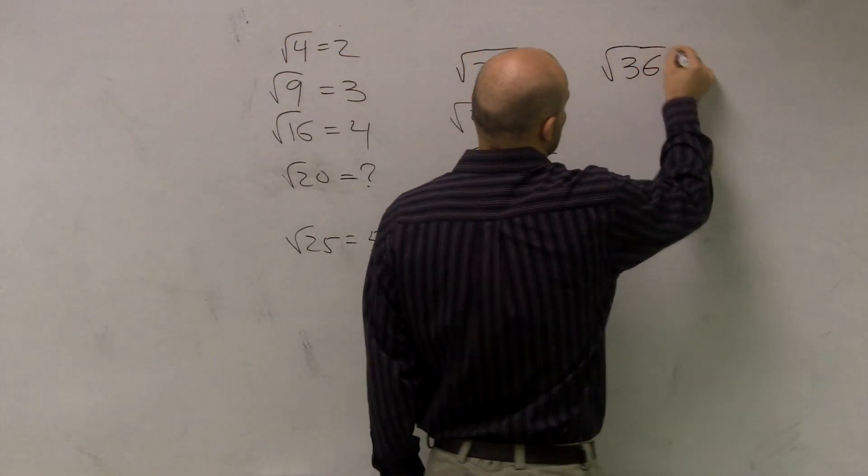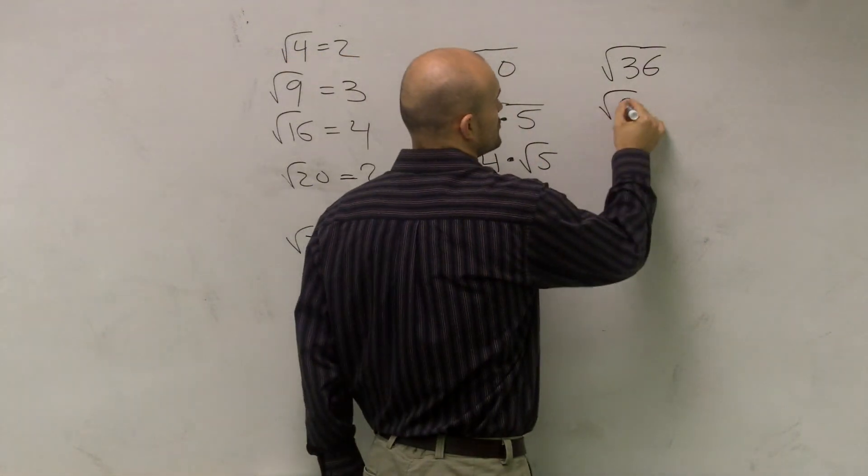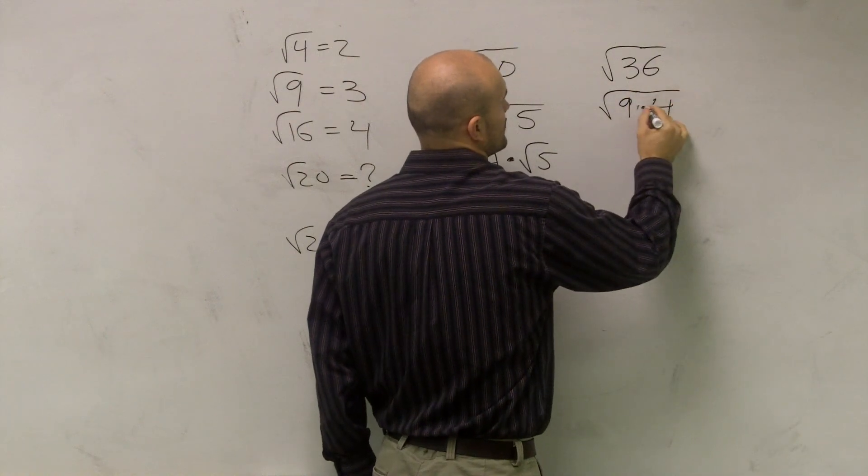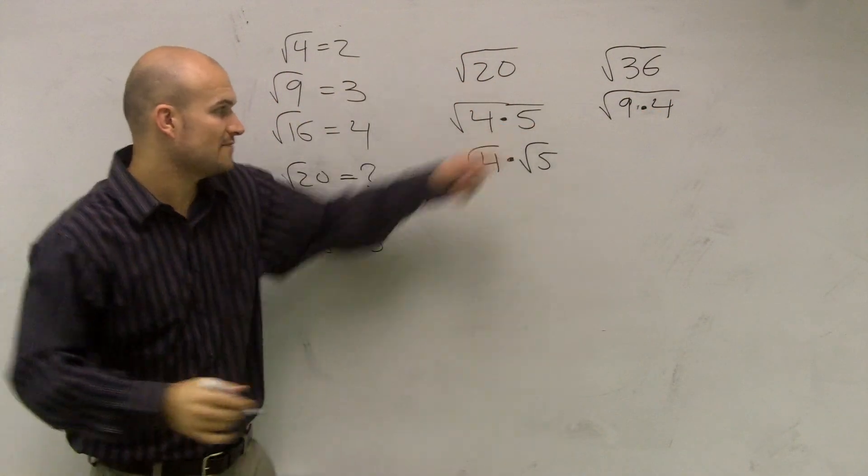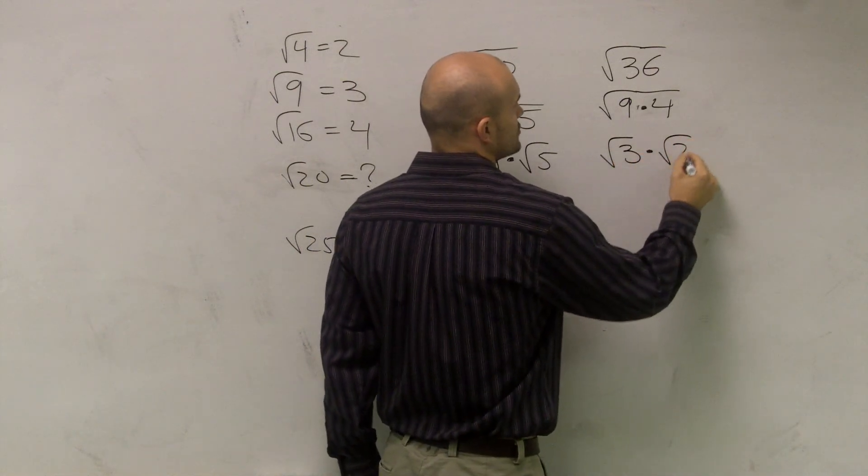Let's take a look at square root of 36. I could rewrite square root of 36 as square root of 9 times square root of, I'm sorry, I could rewrite it as square root of 9 times square root of 4, right? And then if I follow this rule, I could say that is the square root of 3 times the square root of 2. No, sorry.